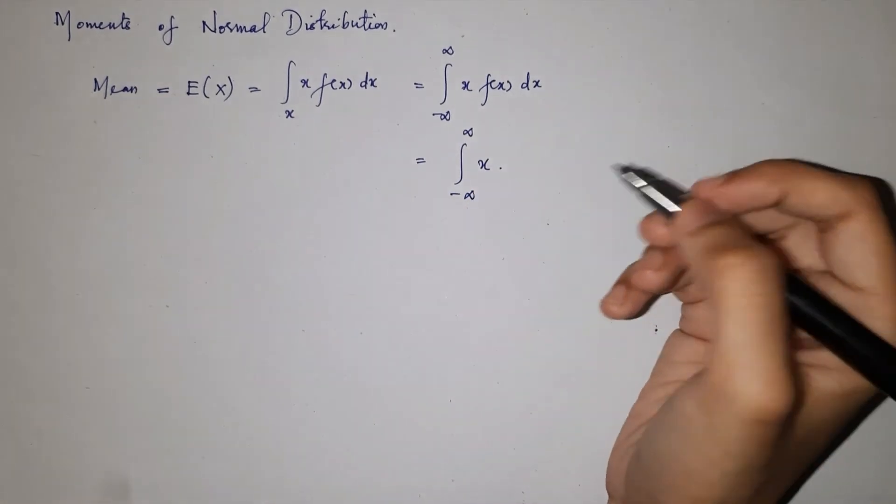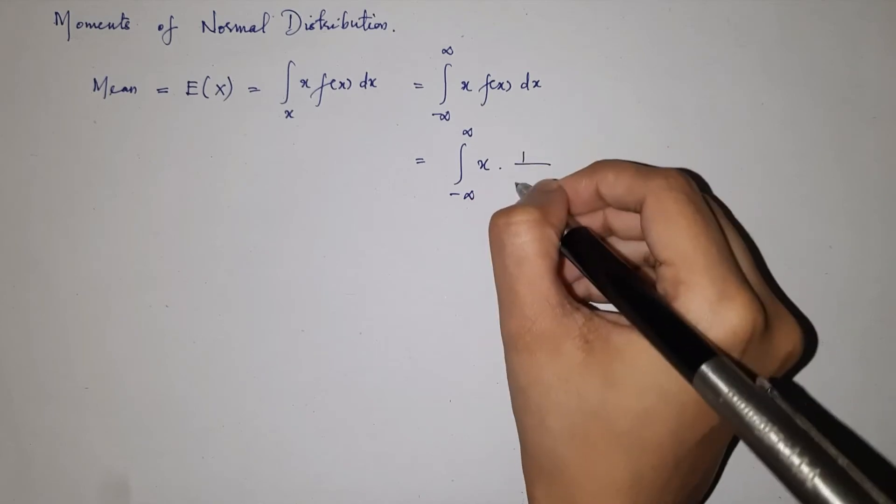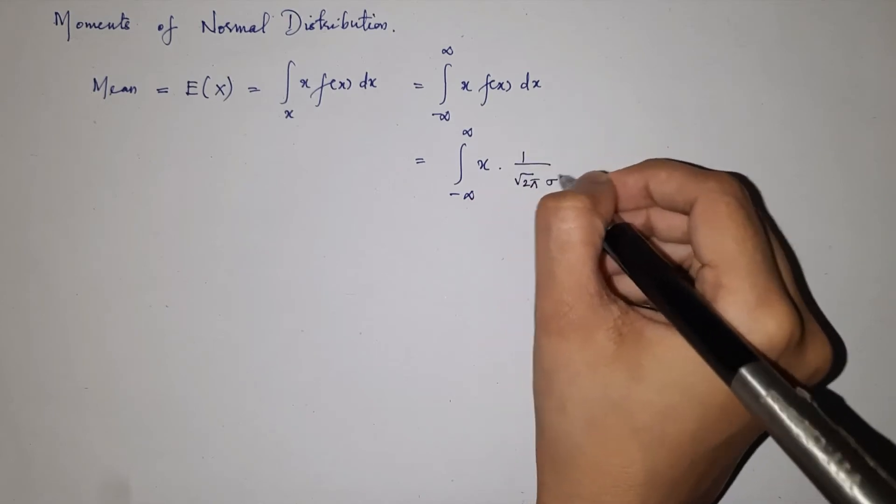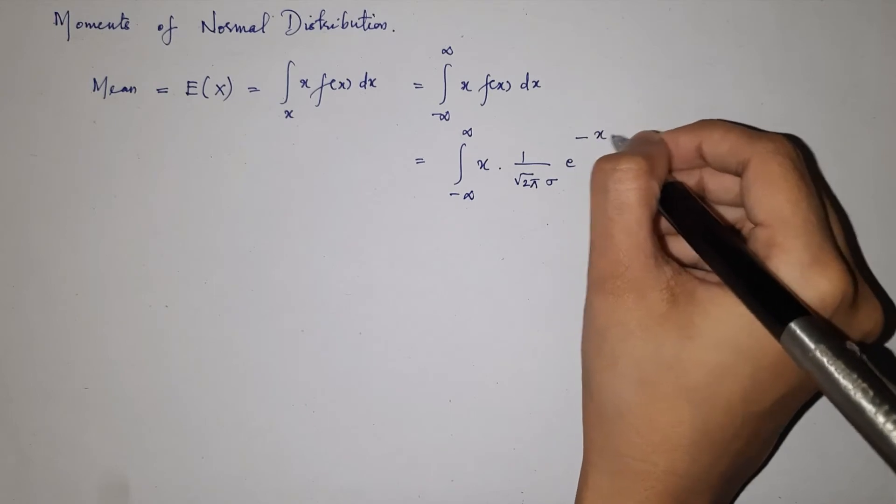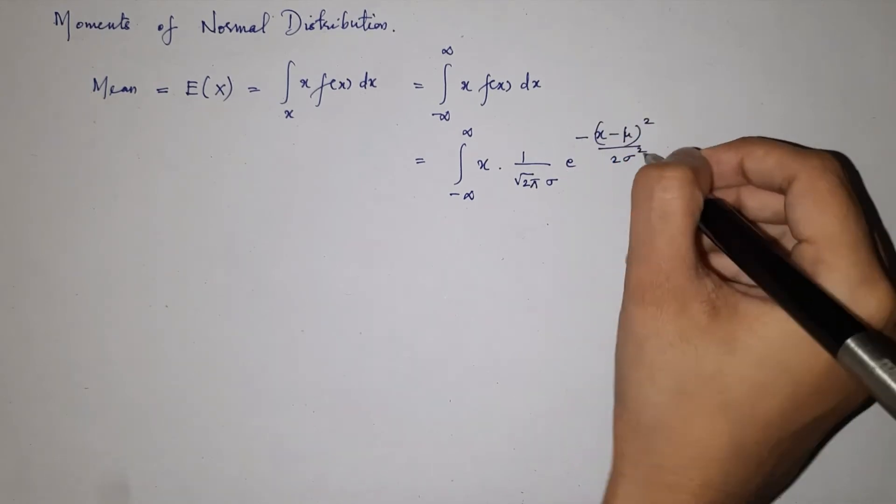we are going to expand f of x. The probability density function of normal distribution is 1 by root 2 pi sigma e raised to minus x minus mu whole square by 2 sigma square dx.